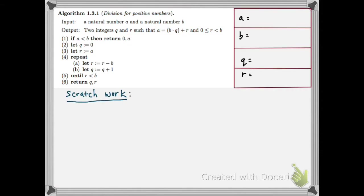So I'm going to put my scratch work down here, and we'll go through a concrete example. So first, we need our input. Suppose I want to try this algorithm for A equals 24 and B equals 7.